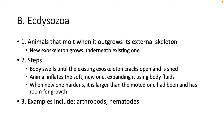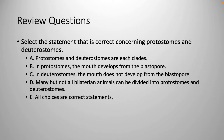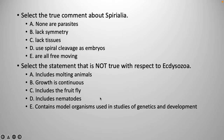Jumping into some review questions. 'Select the statement that is correct concerning protostomes and deuterostomes.' It's E — all of these choices are correct statements. They're each clades. Mouth develops first in protostomes; in deuterostomes the mouth is second. Not all bilateral animals can be divided into protostomes and deuterostomes.